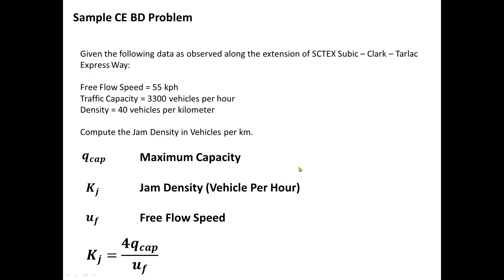So let's solve the problem. Given is the free flow speed, given is the traffic capacity, and of course the density is also given. So direct substitution, we can have our solution as 4 times 3,300 divided by 55. And finally, our jam density value will be 240.